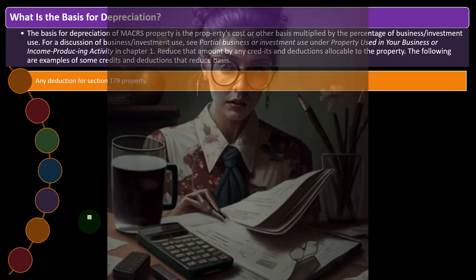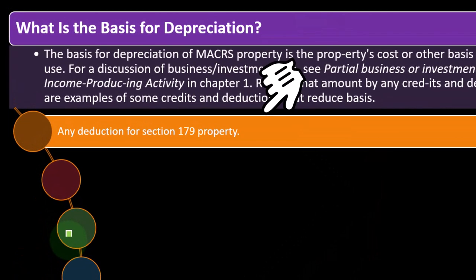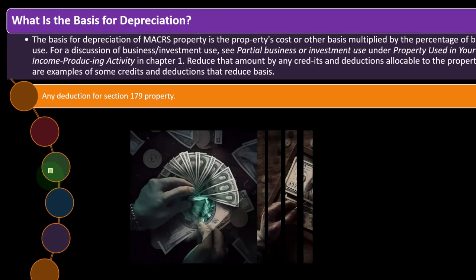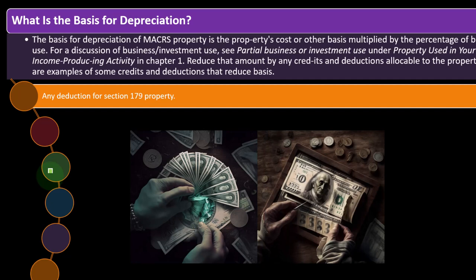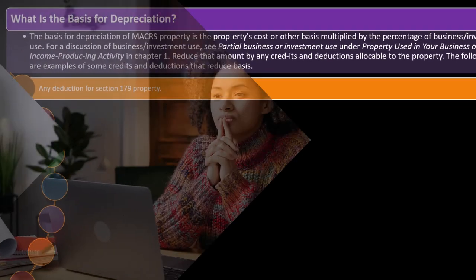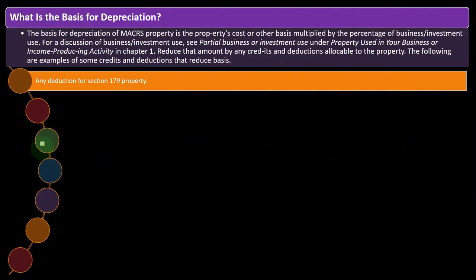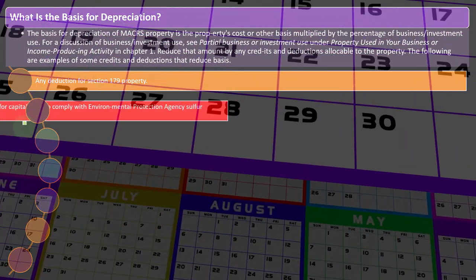For example, if we had a deduction for Section 179 property, you can think of it as though we got a whole lot of depreciation — possibly the whole amount — in year one, similar to as if we just got to expense it in year one. You might think: why go through the whole capitalization process if you're just going to let me expense the whole thing? Well, in that case you got the depreciation in year one, but you no longer have any basis left to take in future years — which is okay because you'd rather take it in the first year anyway.